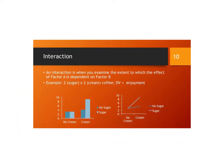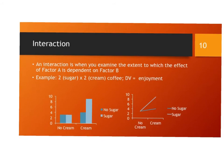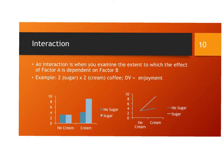What is an interaction? An interaction is defined as the examination of the extent to which the effect of factor A is dependent on factor B. For instance, if we're trying to look at the enjoyment of coffee, coffee enjoyment goes on my y-axis.